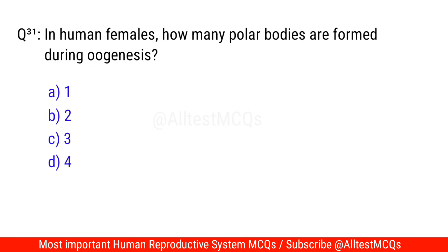Question No. 31: In females, how many polar bodies are formed during oogenesis? The correct option is C. Three.